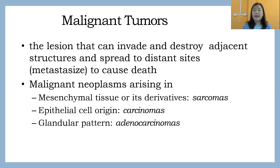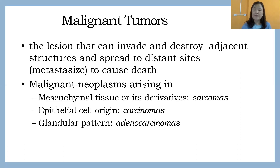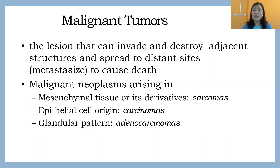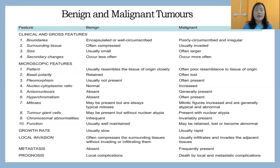Malignant tumors, on the other hand, are very aggressive in nature. They invade and destroy adjacent structures, spread from one place to another, and eventually cause the death of the patient. Regarding nomenclature for malignant tumors, they can have a suffix of either '-carcinoma' or '-sarcoma.' Sarcoma is given to tumors that are malignant but of mesenchymal tissue or mesenchymal origin. If the tumor is of epithelial tissue or epithelial origin and is malignant, it will have the suffix '-carcinoma.' For example, if someone is suffering from oral cancer in malignant form, we call it squamous cell carcinoma.